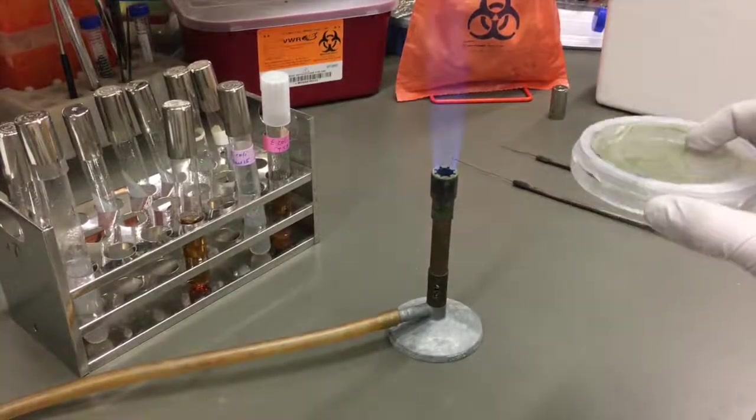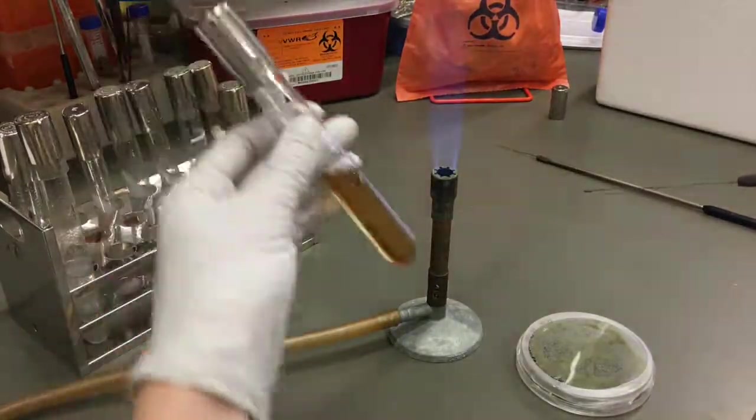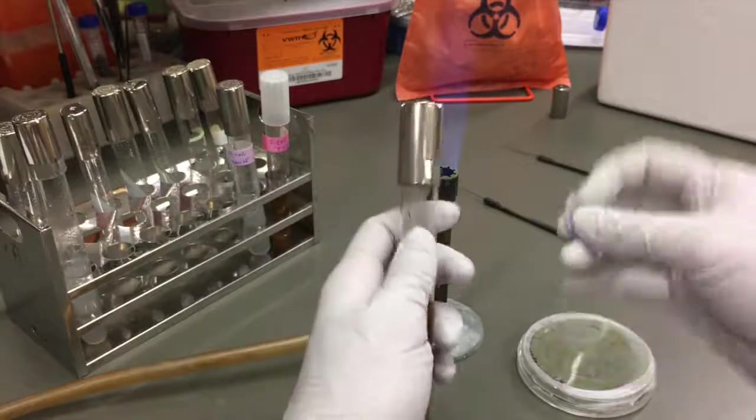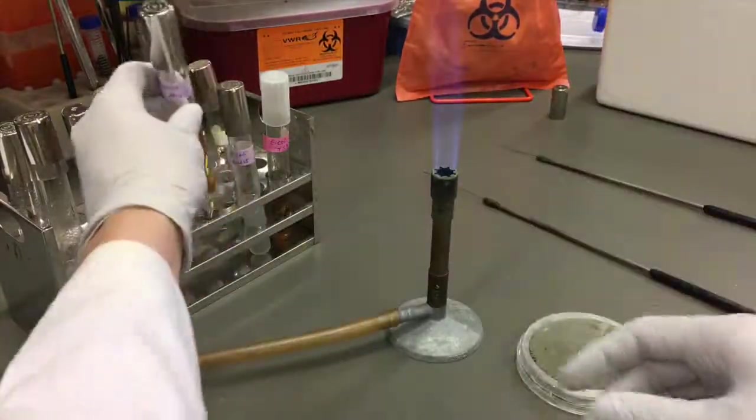Plate to broth culture: we are starting with a culture plate and we are going to be using our inoculation loop. We are going to transfer our new culture into a TSB broth, properly labeling first on the culture tube.